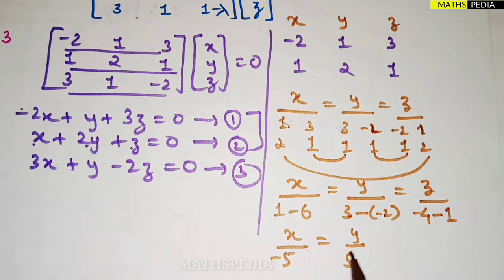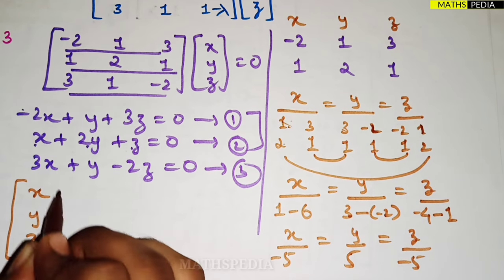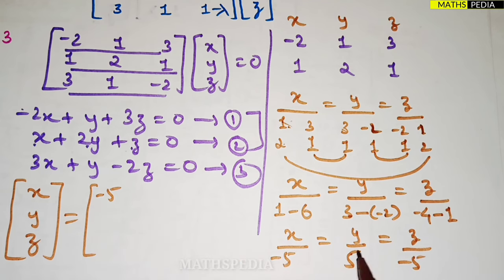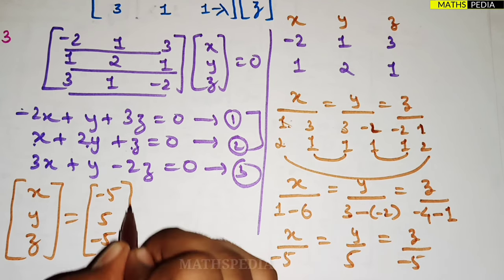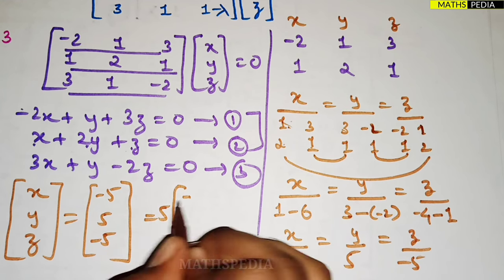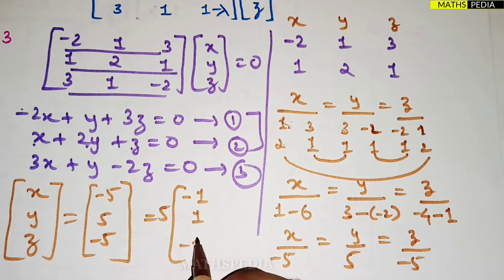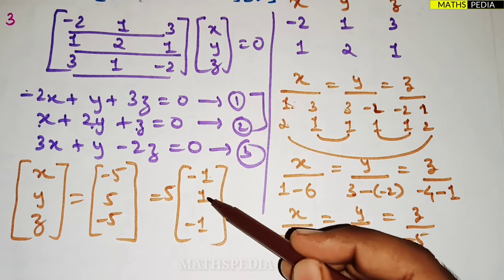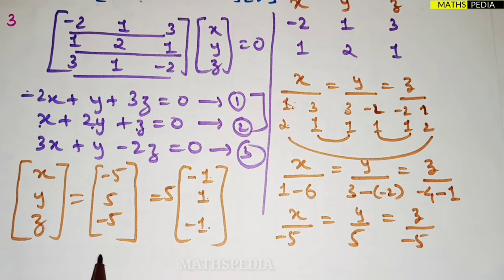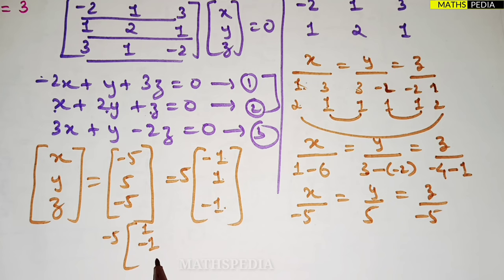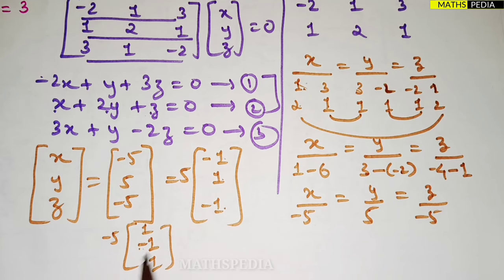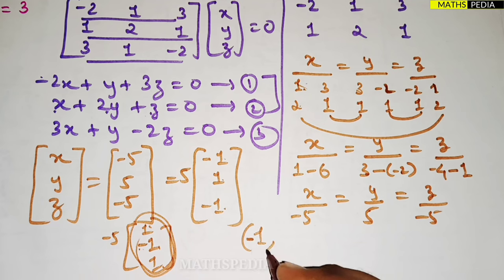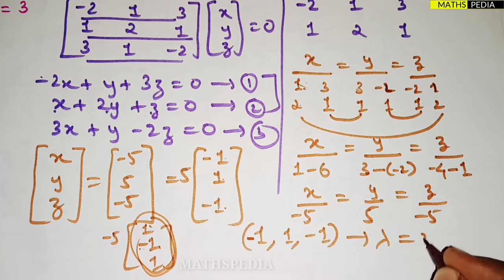The eigenvector is [−5, 5, −5]. Taking out the common factor of 5 gives [−1, 1, −1]. Alternatively, taking out −5 gives [1, −1, 1]. The sign may change depending on which factor you take out, but the magnitude remains the same. So the eigenvector for λ = 3 is [1, −1, 1] (or equivalently [−1, 1, −1]).